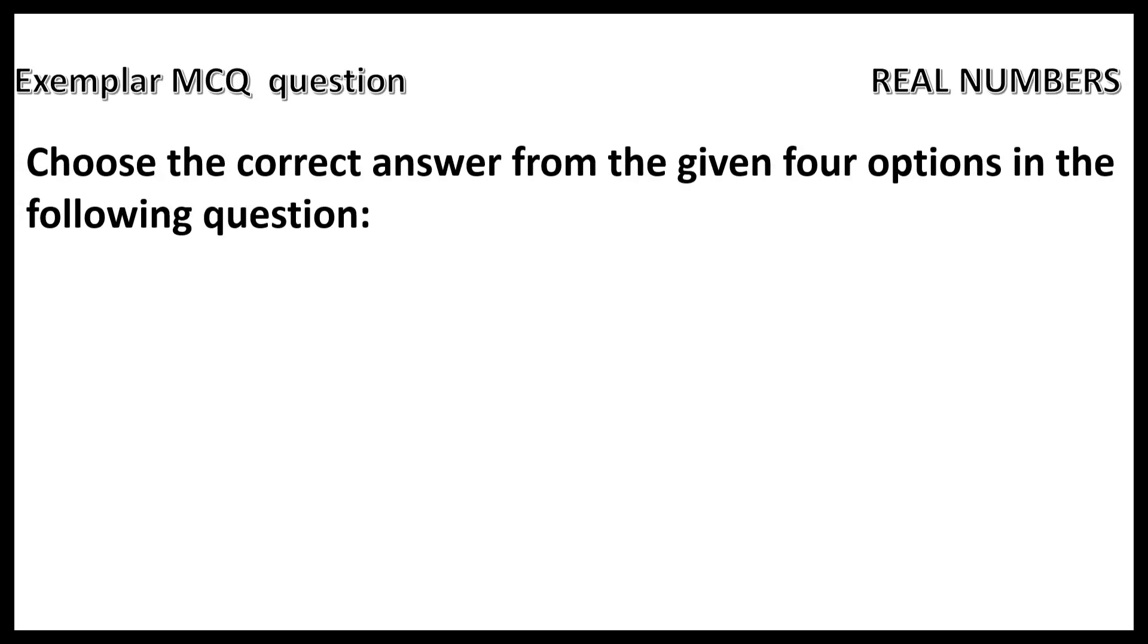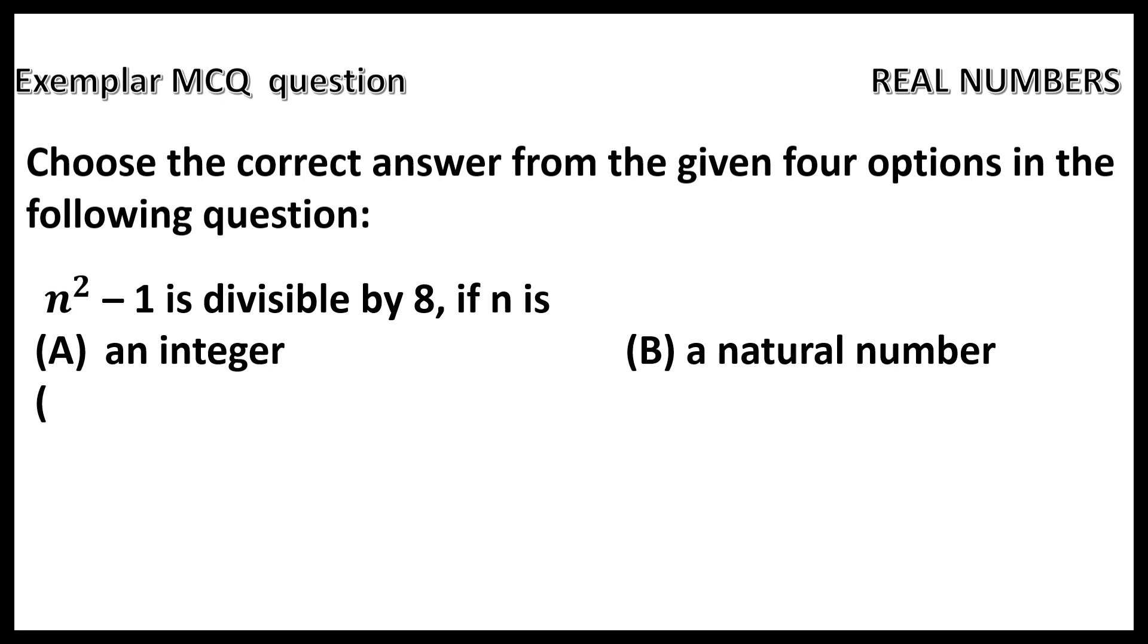Choose the correct answer from the given 4 options in the following question. The question is n square minus 1 is divisible by 8 if n is option A an integer, option B a natural number, option C an odd integer, option D an even integer.